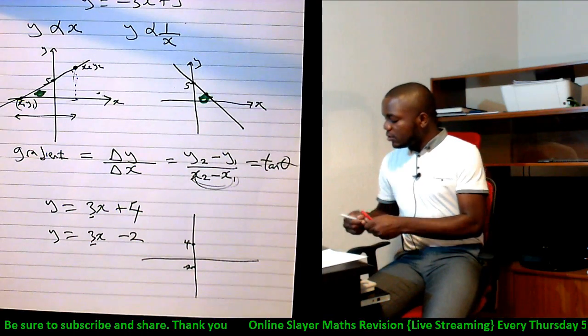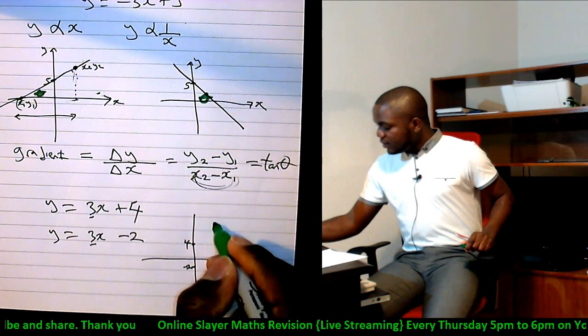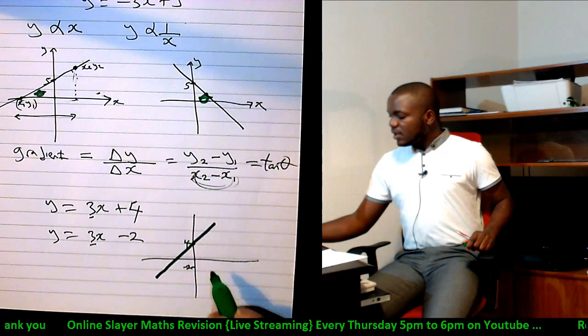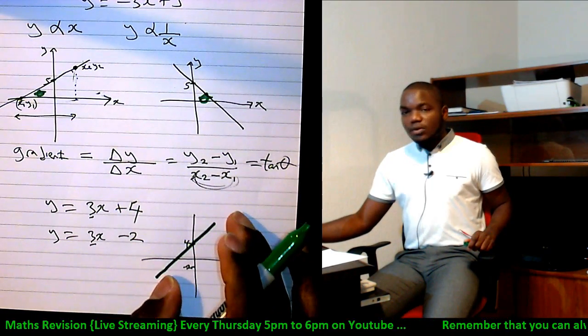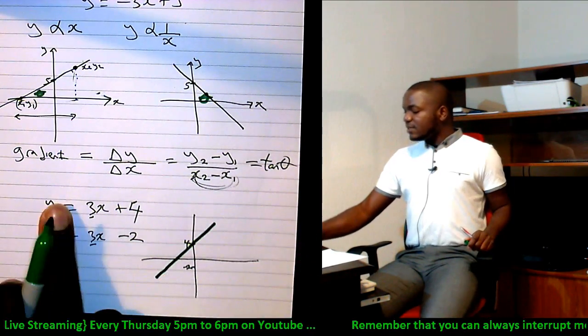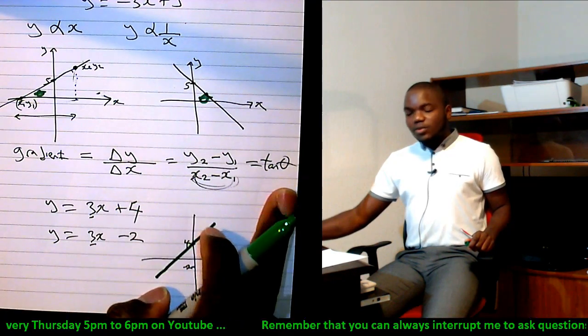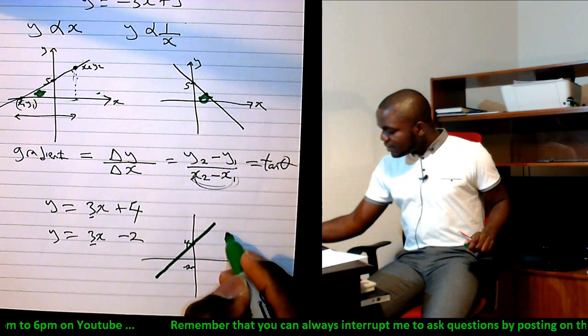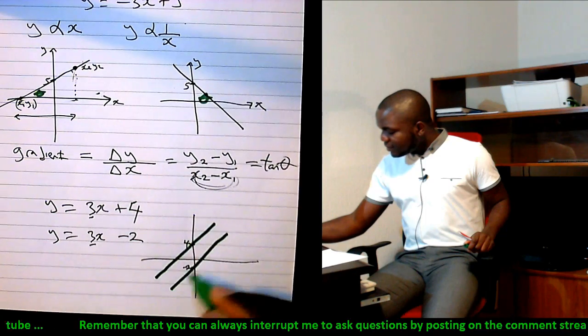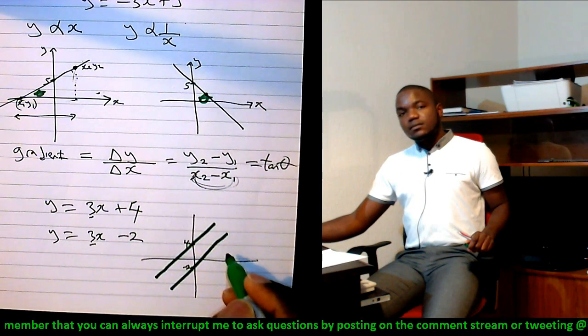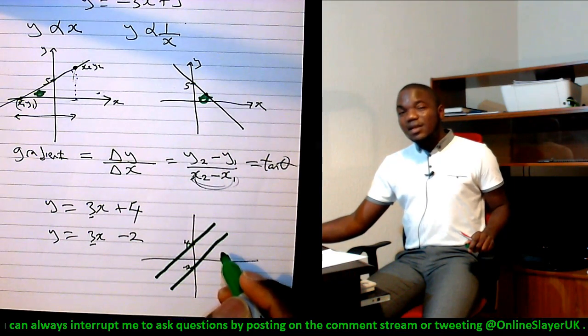And this second line is also going to have the same gradient. And what does the same gradient mean? The same gradient means the same angle with the horizontal. So it's going to be exactly parallel to this one because they have the same gradient. They will never meet.